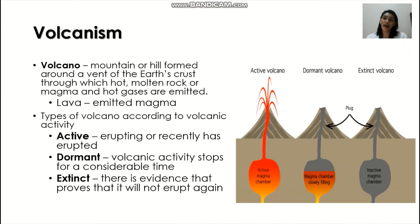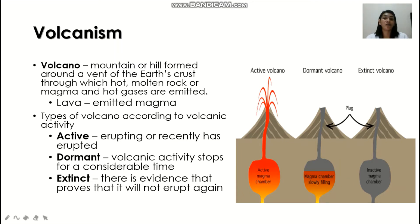First, we have volcanism. We all know what a volcano is. Basically, it is a mountain or hill formed around the vent of the Earth's crust through which hot molten rock or magma and hot gases are emitted. There are three types of volcano according to volcanic activity: active volcanoes, dormant volcanoes, and extinct volcanoes.